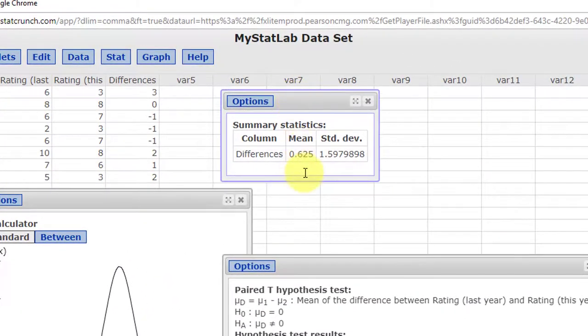And here we get again, the mean, which is D bar is 0.625. And the standard deviation, S sub D, which is just the standard deviation of these differences, is 1.598. So quickly done using StatCrunch.